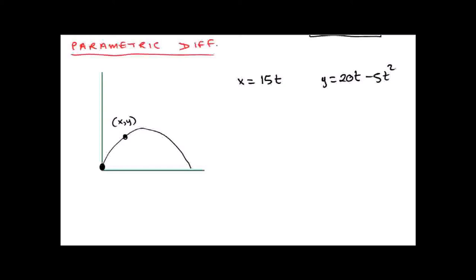Now unfortunately I'm going to be asked to find dy dx. The problem is there is no equation where y and x appear in the same formula — I have x in terms of t and y in terms of t, with no formula mixing x's and y's. The handiest thing to do is find dx dt because I'm told what x is in terms of t. If you differentiate 15t, you just get 15.